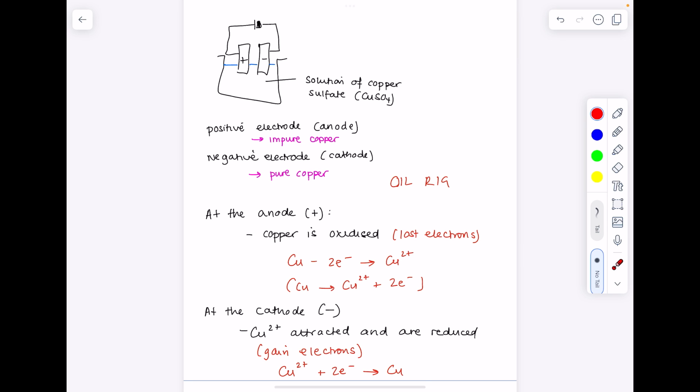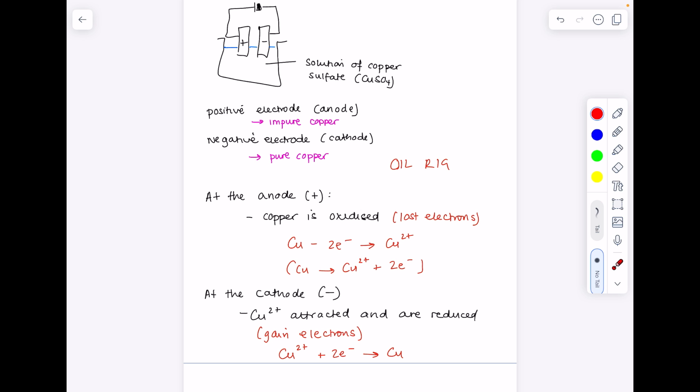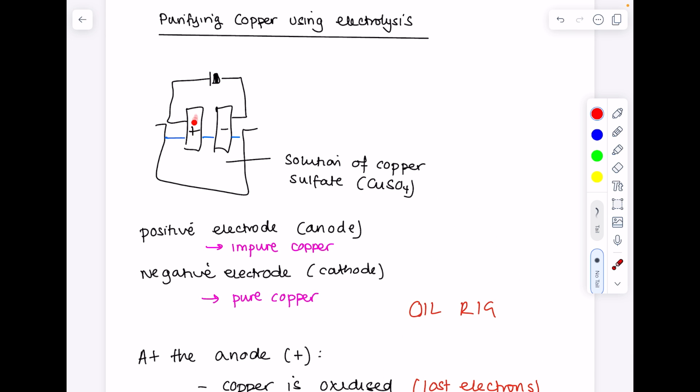We often use things like propanone in order to purify it. Sometimes they ask you to look at changes in mass. So you'll expect the anode here to lose mass because that's where oxidation is taking place. You'll expect the cathode here to gain in mass because of the formation of copper.